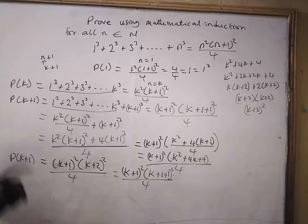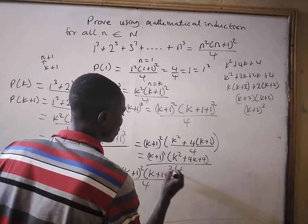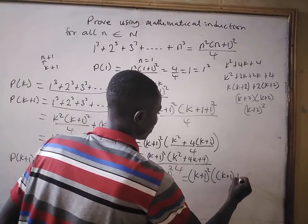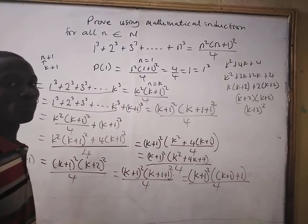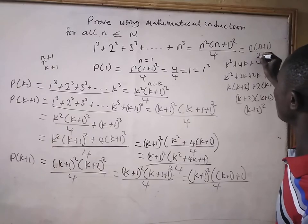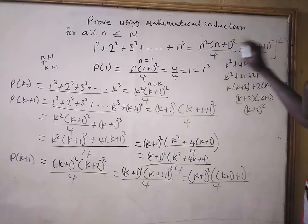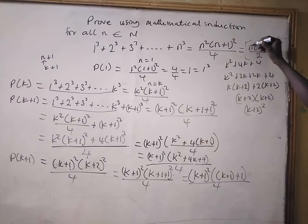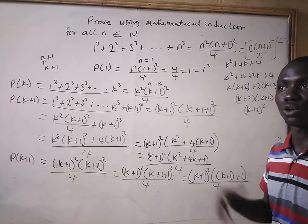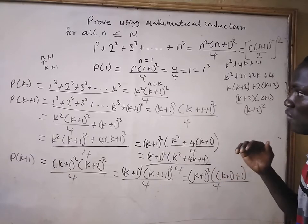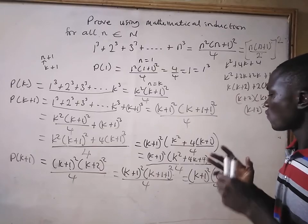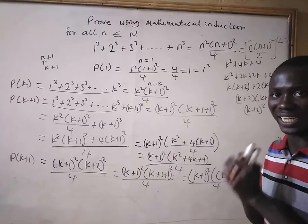Hence proved. This can also be written as (k+1) squared times (k+1+1) squared divided by 4. Remember the answer can be written as n times (n+1) all divided by 2, squared. From the principle of mathematical induction, P(k+1) is true whenever P(n) is true. So we conclude that P(n) is true for all n in the subset of natural numbers.